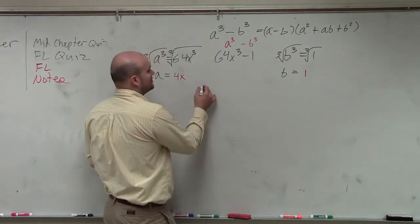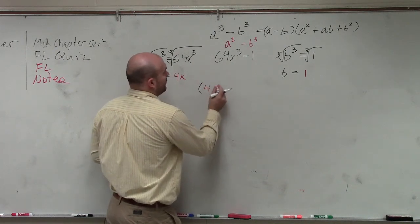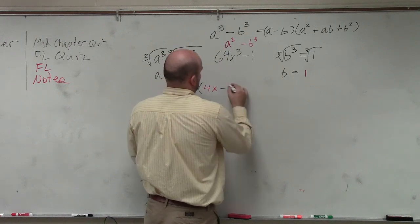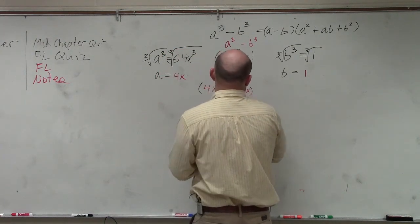So you really don't have to do too much factor. You just have to be plugging it in. So therefore, we'll have 4x minus 1, and then we have 4x squared